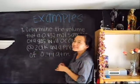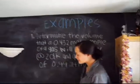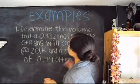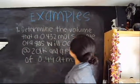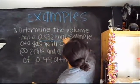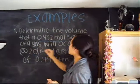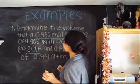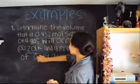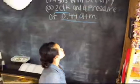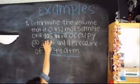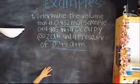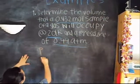Here are some practical examples for PV=NRT problems. We have to determine the volume of a 0.32 mole sample of a gas at a pressure of 0.44 ATM. So you are given the moles, the temperature, and the pressure. You would have to use the PV=NRT formula.